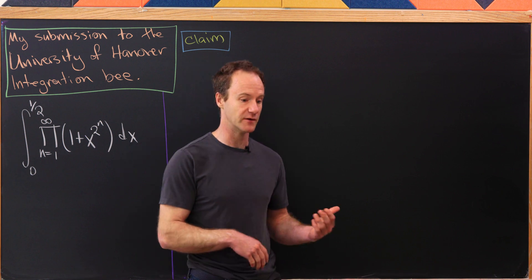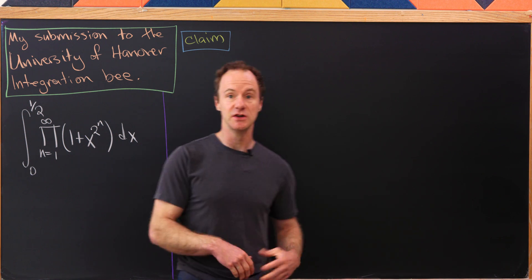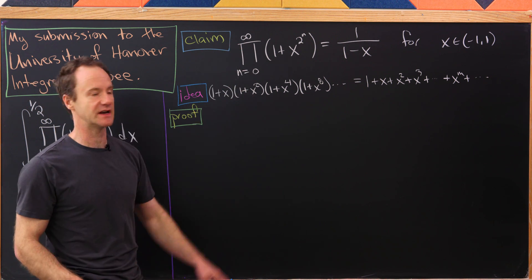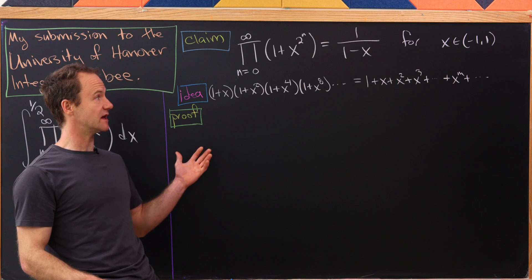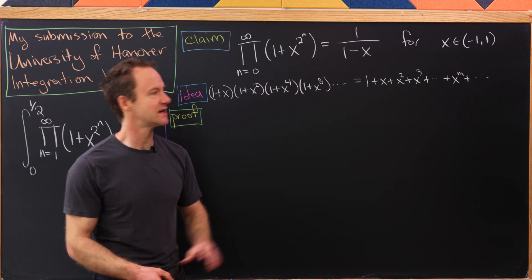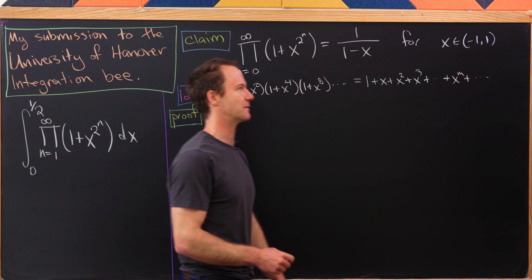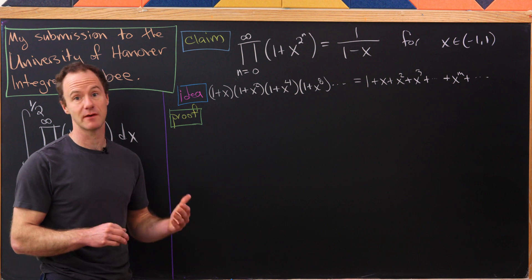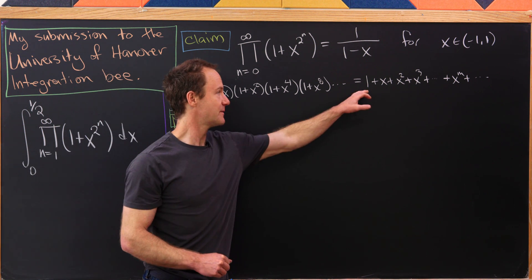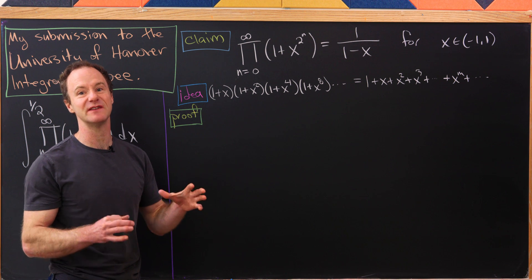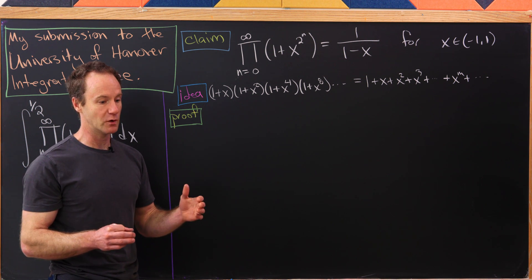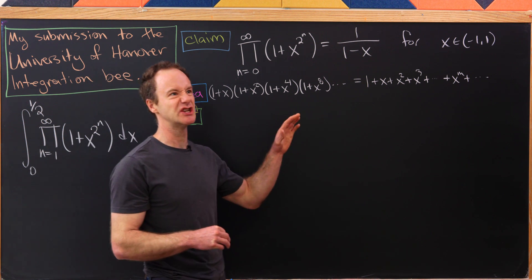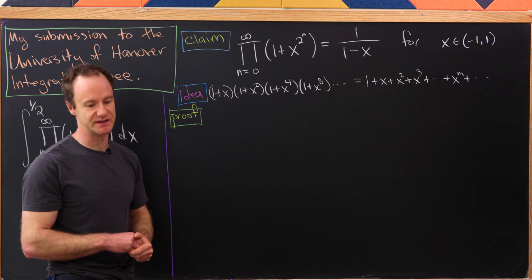The first thing that we'll do is prove a claim which will help us use that trick. That claim is that the product from n equals 0 to infinity of 1 plus x to the 2 to the n is in fact 1 over 1 minus x, for values of x on the interval from minus 1 to 1. The idea behind this comes from the unique representation of any natural number in base 2, which means every power of x in this expansion will be achieved exactly one time.